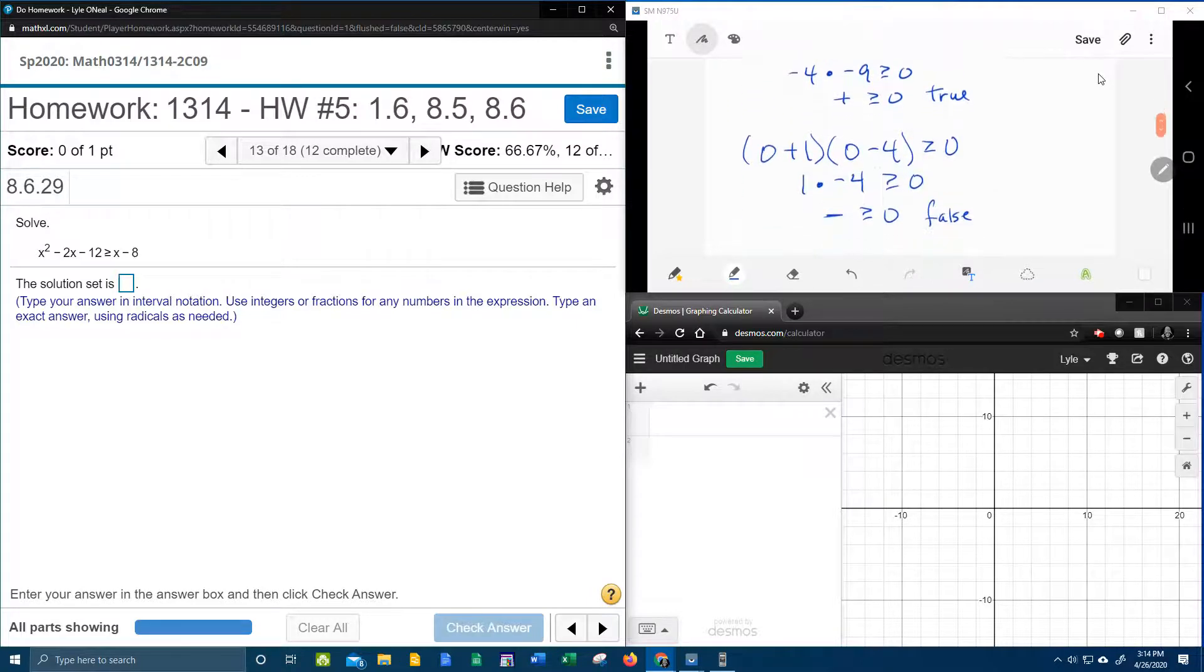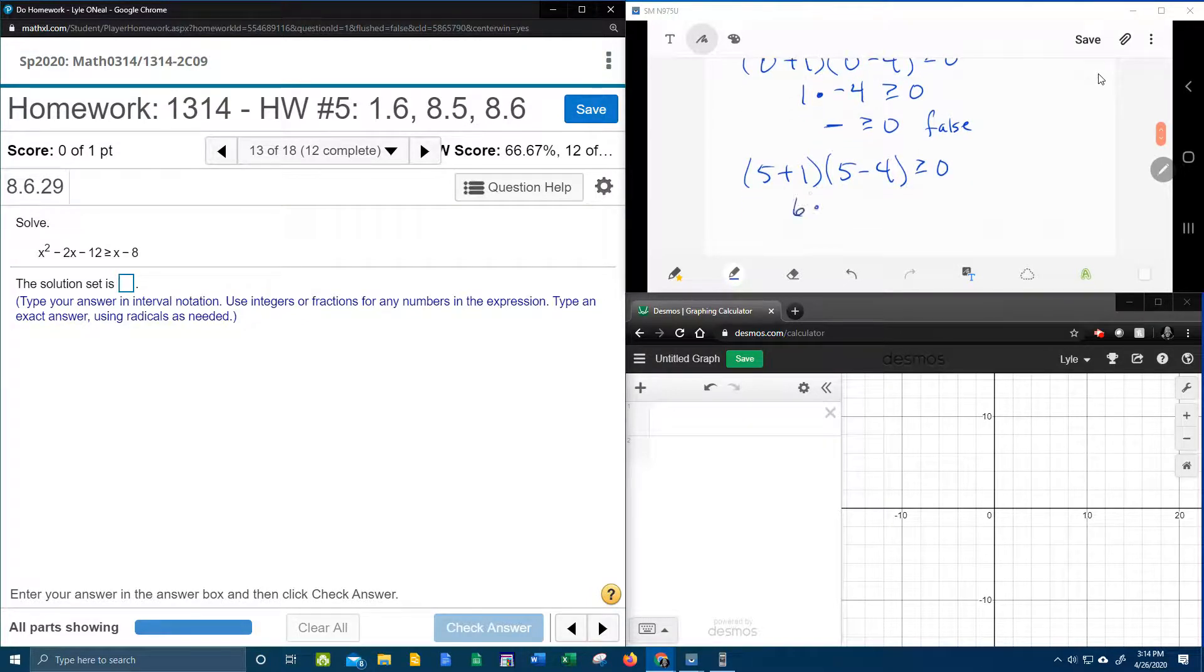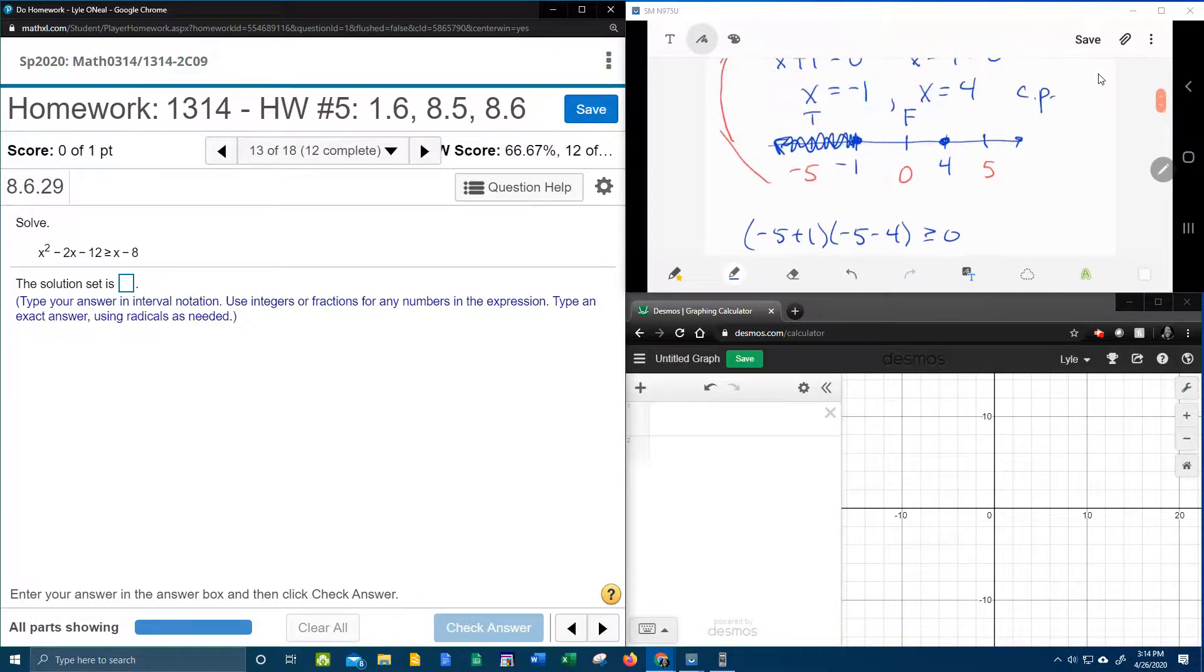Now, let's check our last test point, positive 5 plus 1, positive 5 minus 4, greater than or equal to 0. That's going to be 6 times 1. 6 times 1 is 6, which is definitely a positive number. And we know that a positive number is greater than or equal to 0, so that is true. And that means that everything in this area is going to shade. That's going to be solution.